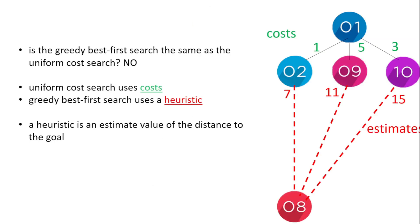Now that might seem similar to the uniform cost search, but they're not the same. The uniform cost search uses costs. How much does it cost to go from node 1 to 2, or 1 to 9, or 1 to 10? Those are costs.